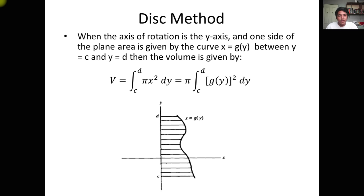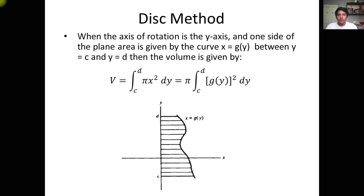Take note that this dy and dx is only applicable in the disk method. In the succeeding methods — the washer and the cylindrical method — it's the opposite. If the axis of rotation is on the X-axis, you're going to use dy. And if the axis of rotation is on the Y-axis, you're going to use dx. This is an exception for the disk method: when the axis of rotation is on the Y-axis, we use dy.